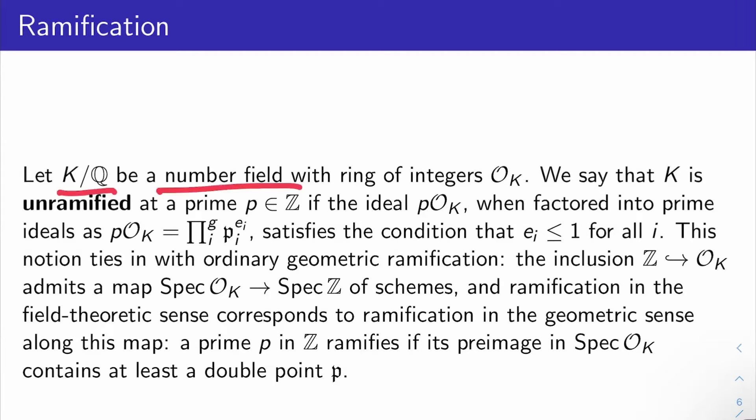Let K/Q be a number field with ring of integers O_K. So a number field is just a finite extension of Q, and the ring of integers in the number field is the set of all elements in the field that satisfy monic polynomials with integer coefficients. So we say that K is unramified at a prime p in Z if when you take the ideal pO_K and factor it into prime ideals, which you know is always possible, let's say those prime ideals are (p_i)^(e_i). We're going to say K is unramified at p if all these e_i's are ≤ 1. In other words, when you take p and you sort of think of it as an ideal upstairs in K, you factor it into primes there, you factor it into distinct primes. There's no repeated primes.